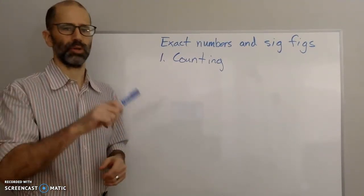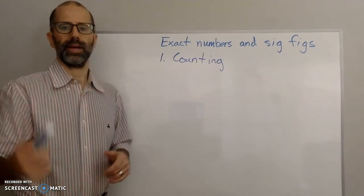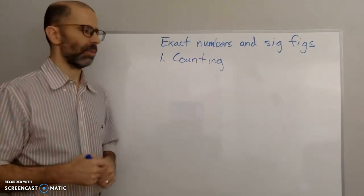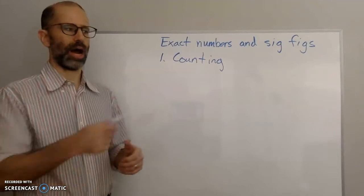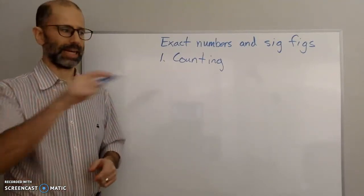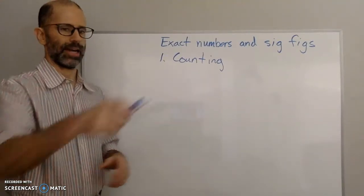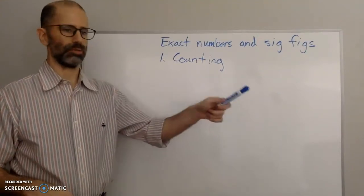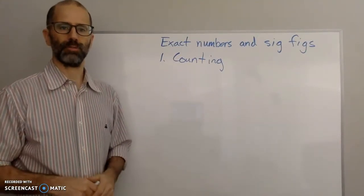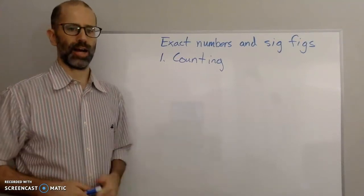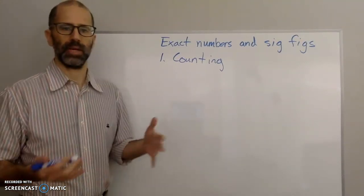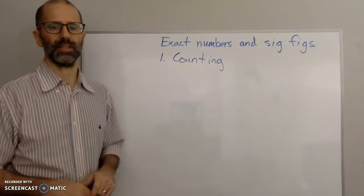I can count the number of people in a room — that's not measuring the people in a room. If I know how many yards are in a football field, I can count and say it's a hundred-yard football field. Did I measure out the yards? No. So that would be an exact number.